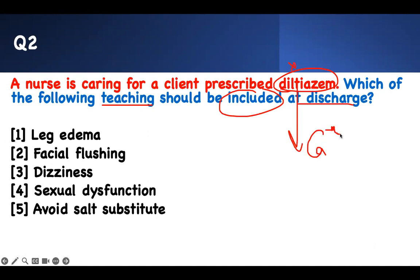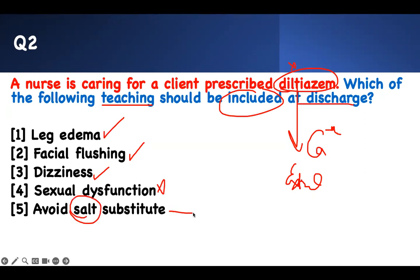What does a calcium channel blocker do? It blocks calcium and prevents muscle contraction. When the muscle does not contract, blood pools in the extremities — you get edema. Blood pools in your face — you get headache and flushing. Your blood pressure goes down because of severe vasodilation, so you get dizzy. It has nothing to do with sexual dysfunction.